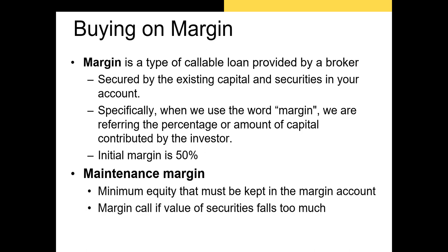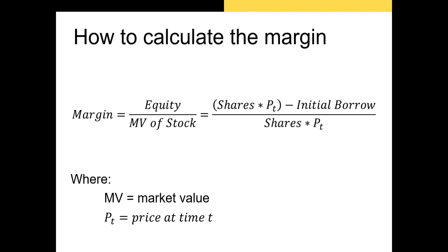Here's the formula we use to calculate margin — it can be used to solve almost any margin problem. Margin is essentially the percentage of your brokerage account comprised of your own equity. The market value of your portfolio equals the number of shares times the price per share. To calculate equity, take the market value of your portfolio and subtract the amount you owe your broker. That gives you your margin.